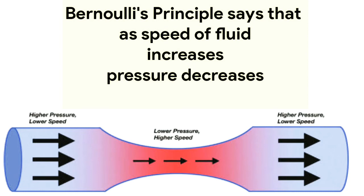The materials I have used to demonstrate Bernoulli's principle are: number one, a glass bowl; number two, thermocool bowls; and number three, a hairdryer. Let us see this experiment to understand it clearly.